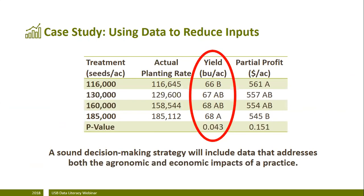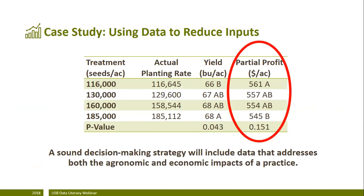One thing to consider when using our data is that sometimes there's a little bit more to the story. If we take into account the additional cost of the additional seed for the higher seeding rates, you can see that the decision that we may make could be different. In this case, the lowest seeding rate — 116,000 seeds per acre — is the treatment that achieved the highest profit. It's important to make sure that when we're trying to make a decision, we're taking into account any and all data that can help assess the agronomic and economic impacts of that particular practice.